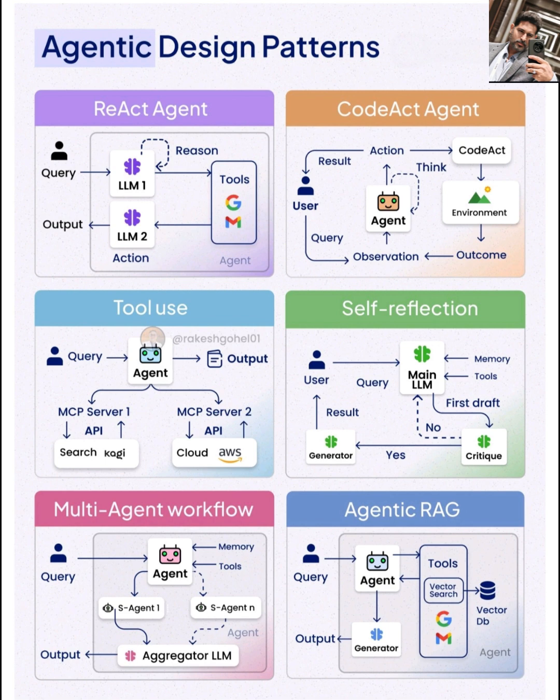Next, we have the CodeAct agent. This pattern focuses on using code as a primary way for the agent to interact with its environment. The agent takes a user query, thinks about the necessary action, and then generates code to execute that action in the environment. It observes the outcome and uses that observation to inform its next steps. This is particularly useful for tasks that require precise manipulation of systems or data through programming.